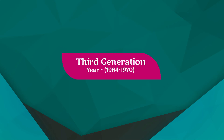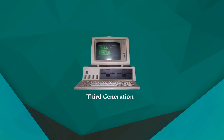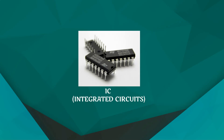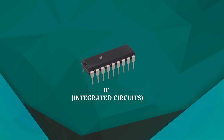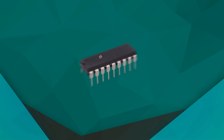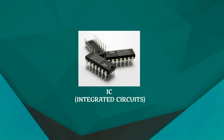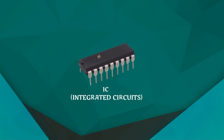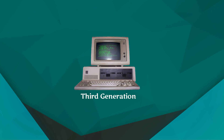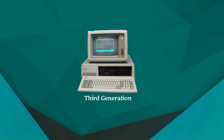Third generation: year 1964 to 1970. The third generation computers were invented in the year 1964. In this generation, IC — Integrated Circuits — were used as the electronic component. The development of IC gave birth to a new field of microelectronics. The main advantage of IC is not only the small size but its superior performance and reliability. It was first developed by T.S. Kilby. This generation of computers has huge storage capacity and higher calculating speed.